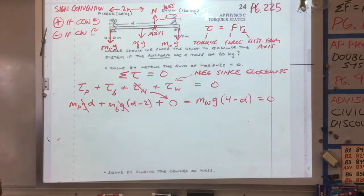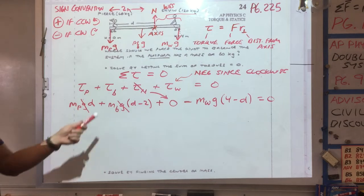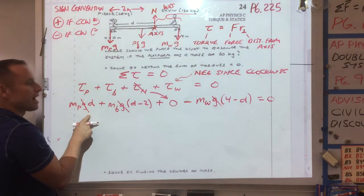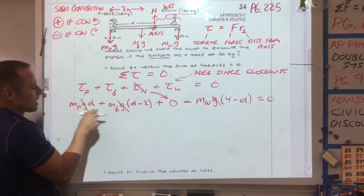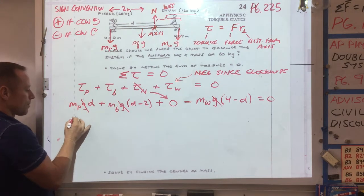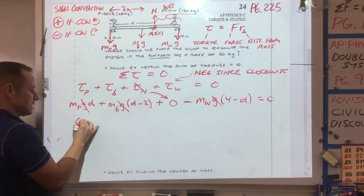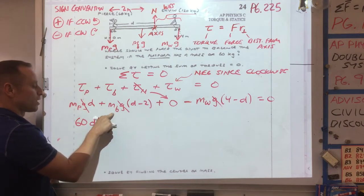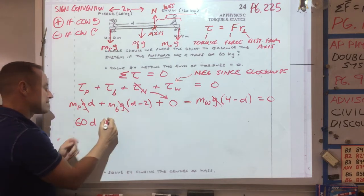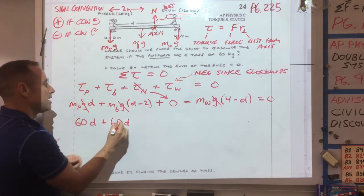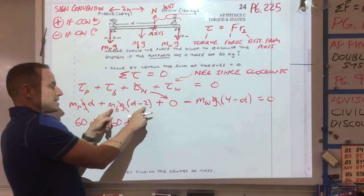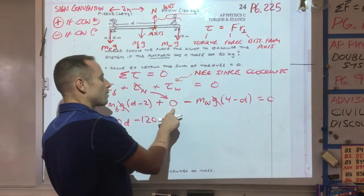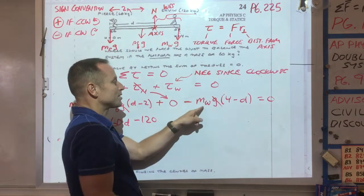At this point I would start plugging in numbers. What you notice is there's a g in every term, so we can cancel that out. So now I'll start putting in numbers. My mass is 60 times d, plus the board itself is 60, so you get another 60d, and then minus 60 times 2, so minus 120.